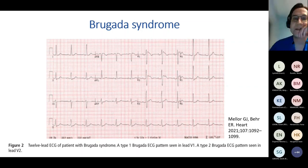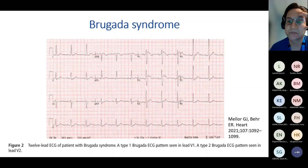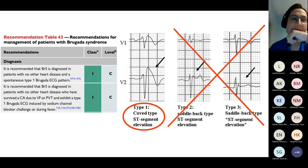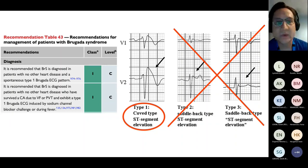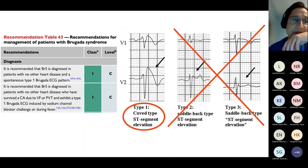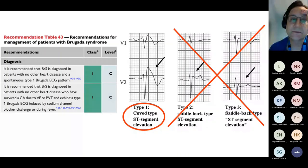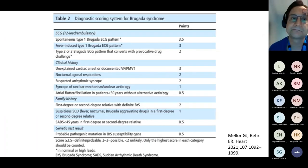Brugada syndrome is the next on the list. This is a typical ECG taken from Elijah Bear's review paper from 2021. In terms of diagnostics, there is only one diagnostic ECG — a Type 1 Brugada pattern — with significant J-point elevation and negative T-waves in V1 to V2, shown on the left-hand side. That's either as a spontaneous presentation, which is important in risk classification, or in people with a first-degree family member who have undergone a drug challenge — in the UK, usually ajmaline, another sodium channel blocker.